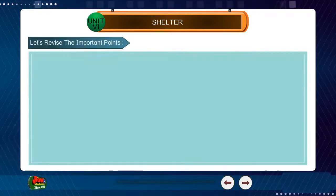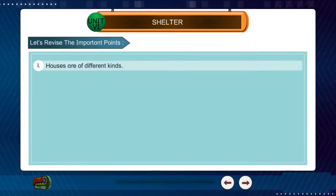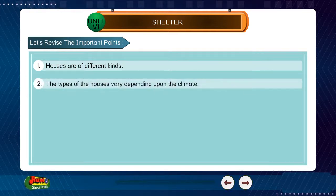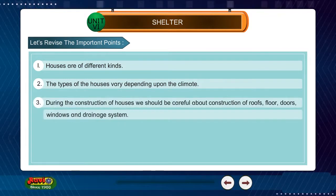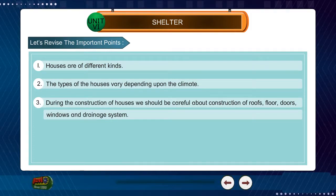Let's revise the important points. 1. Houses are of different kinds. 2. The types of houses vary depending upon the climate. 3. During the construction of houses, we should be careful about the construction of roofs, floor, doors, windows and the drainage system.